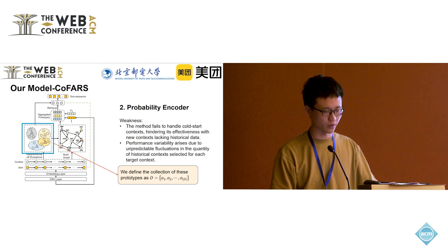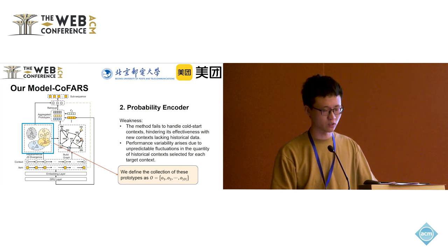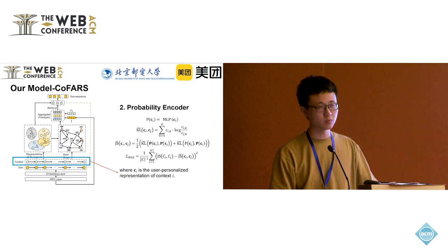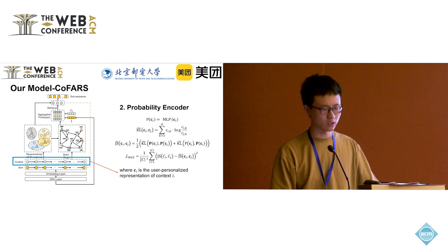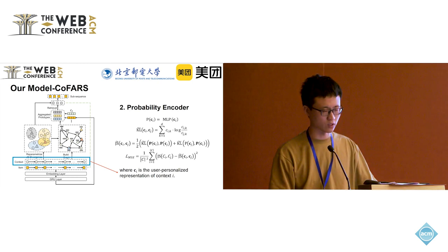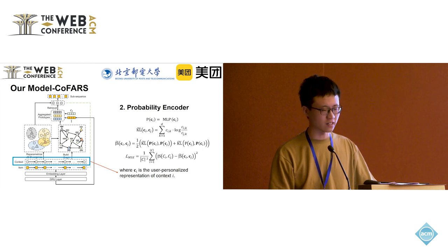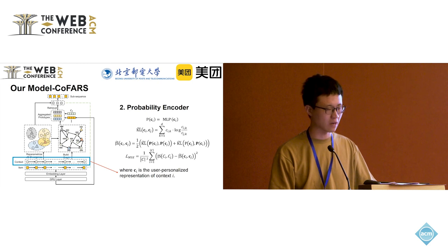To compute the JS divergence between prototypes and contexts, we designed a probability encoder inspired by transfer learning. This encoder maps the latent representation into an estimated probability distribution over the point attributes. We feed the latent representation into an MLP layer with sigmoid activation, where the MLP's output dimensions match the aggregate value counts across all attributes. The estimated JS divergence between representations ci and cj is defined by an equation, and we align the estimated distribution with the ground truth JS divergence calculated from log data through MLC loss.